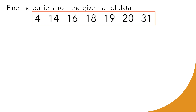Step one: to find the outliers, we need to find Q1 and Q3. We use this formula for ungrouped data: Qk = (k/4) × (n + 1). To solve for Q1, k becomes 1. Our n simply means the total number of data or scores given. Here we have 7 scores, so n = 7.